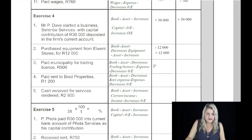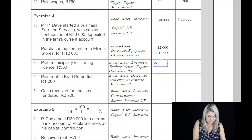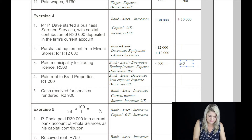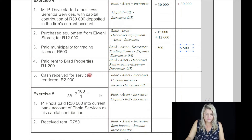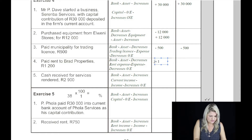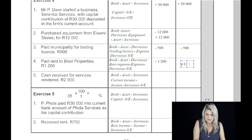Paid municipality for trading license, 500 Rand. The two accounts affected are bank and trading license. Bank is an asset and we're going to decrease the asset by 500 Rand because we're paying money out. An expense always has a negative effect on owner's equity — so that will also be minus 500 Rand. On the fourth: paid rent to Brad Properties, 1,200 Rand. The one account is bank, which is your asset and will decrease by 1,200 Rand. And an expense always decreases owner's equity — 1,200 Rand.